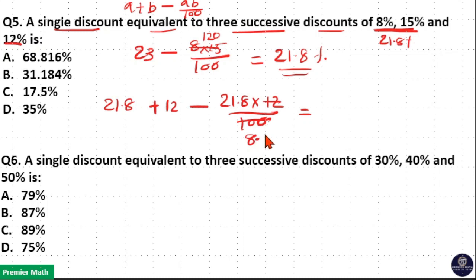So 8.3 goes around 2 times in 21.8 remaining 4. So this will become 2.5.